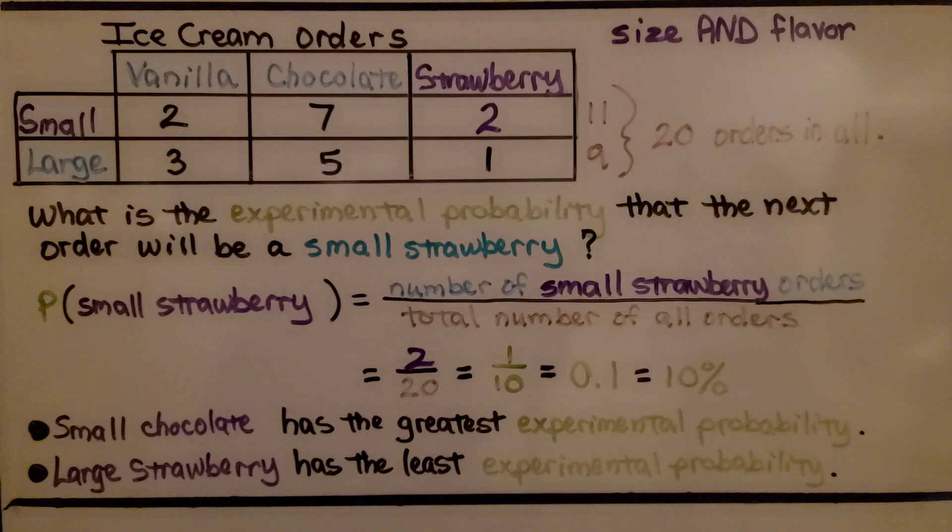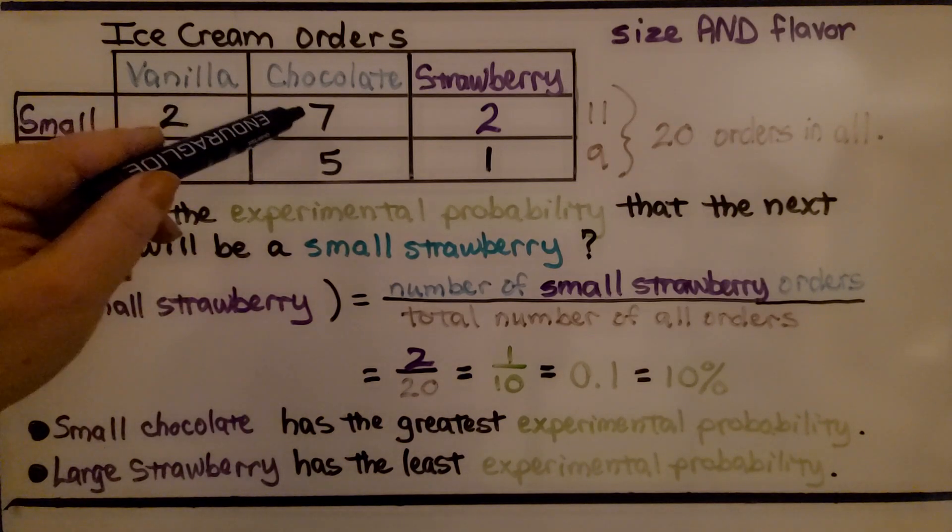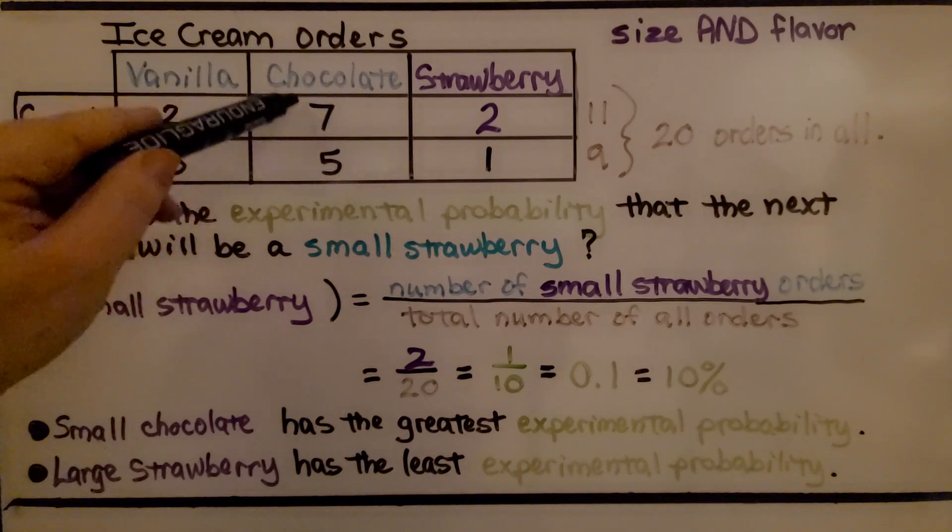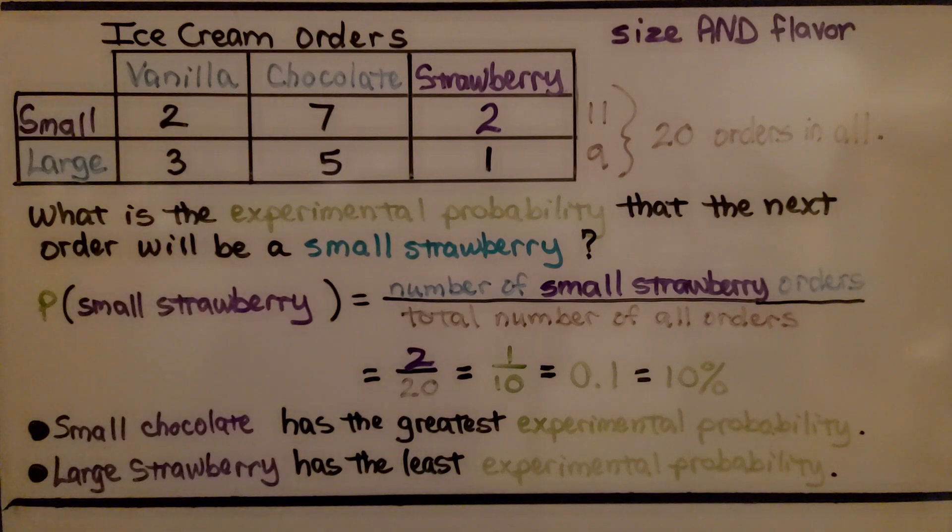Now if we look at this table, small chocolate has the greatest experimental probability. Small chocolate has 7. That's the most out of all of them. That's the greatest. And large strawberry only has 1. That's got the least experimental probability.